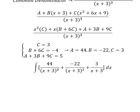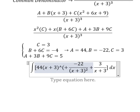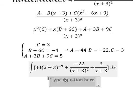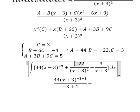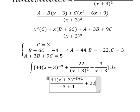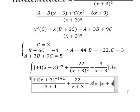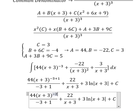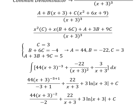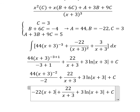Now we have the final answer. We can write this as 44(x+3)⁻³ minus 22(x+3)⁻² plus 3 over (x+3). Integrating each term: 44(x+3)⁻³ integrates to 44 divided by negative 2, giving negative 22(x+3)⁻², and 22 over (x+3) integrates to positive 22 over (x+3), and 3 over (x+3) integrates to 3·ln|x+3|, plus the constant C.